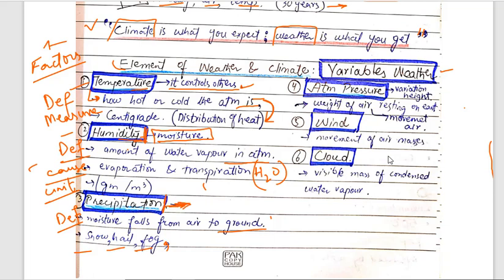The next factor is atmospheric pressure. Atmospheric pressure varies with height — the greater the height, the lower the atmospheric pressure. Atmospheric pressure is defined as the weight of the air layer resting on the Earth. It changes with the movement of air. Wind is the movement of air masses — where strong winds blow, temperature becomes cooler.